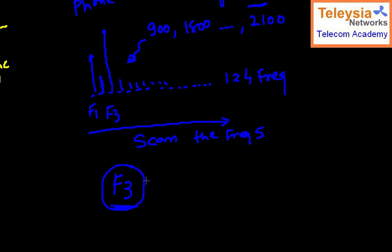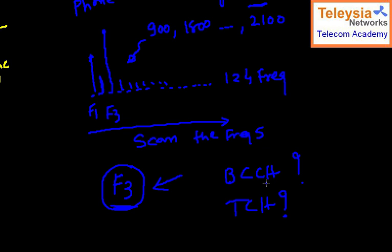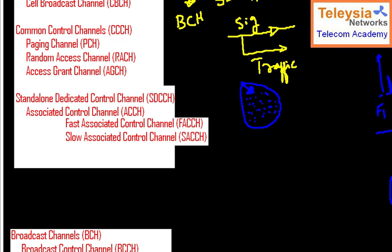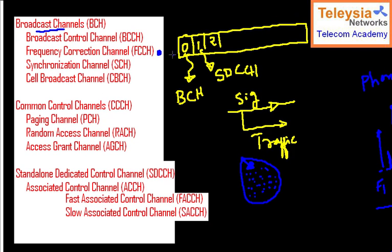After scanning, we latch onto F3 because it is the strongest. We tune the receiver to F3, but we don't yet know whether this is a BCCH frequency or a TCH frequency. If this is a BCCH frequency, it must be transmitting the FCCH — the Frequency Correction Channel. If this is a BCCH frequency, it is definitely radiating the FCCH.